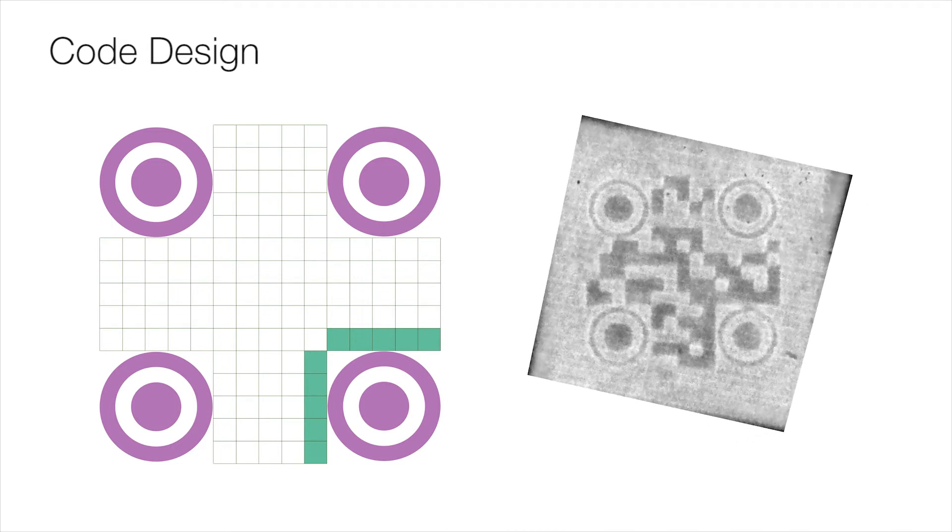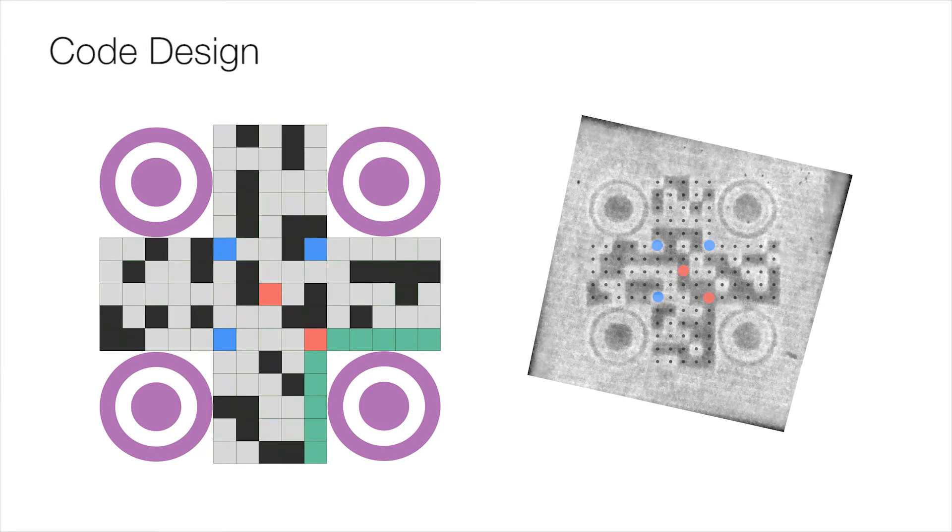To recognize individual cells as binary bits, we place several known bits to enable on-the-fly supervised SVM training. The remaining cells are classified using this SVM classifier.